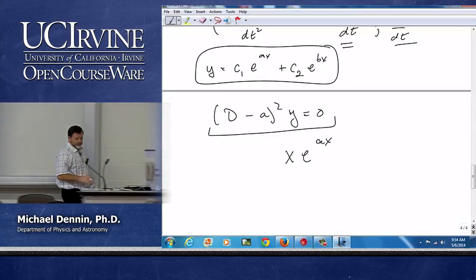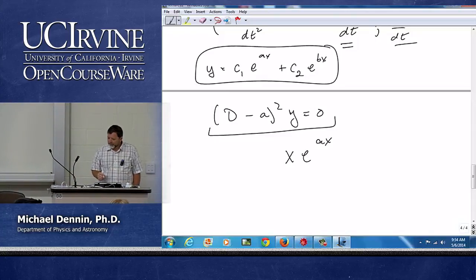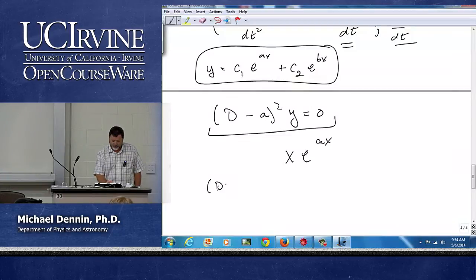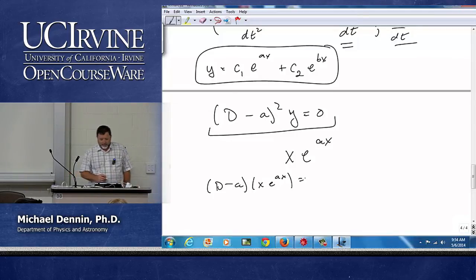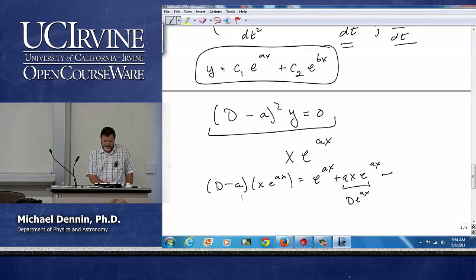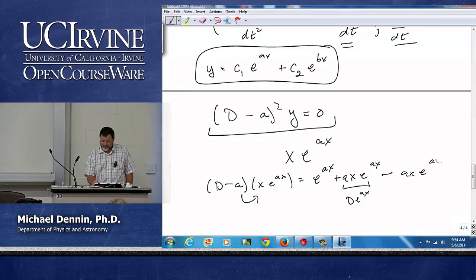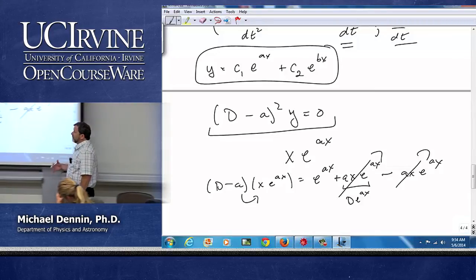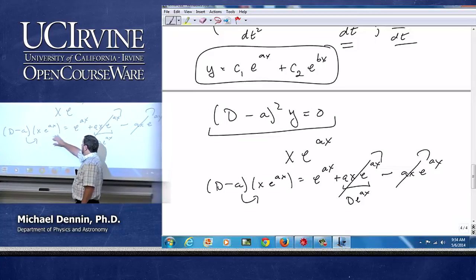And the relevant piece is doing the d minus a on x e to the ax first. Well, that's going to be an e to the ax, the derivative on the x, plus an x e to the ax, minus, whoops, I'm sorry, with an a in front, that's taking the derivative of the e, this is d acting on the e to the ax piece, and then a times that is a x e to the ax. So notice, those two go away. So when I act with my first d minus a on my y, I'm left with e to the ax.